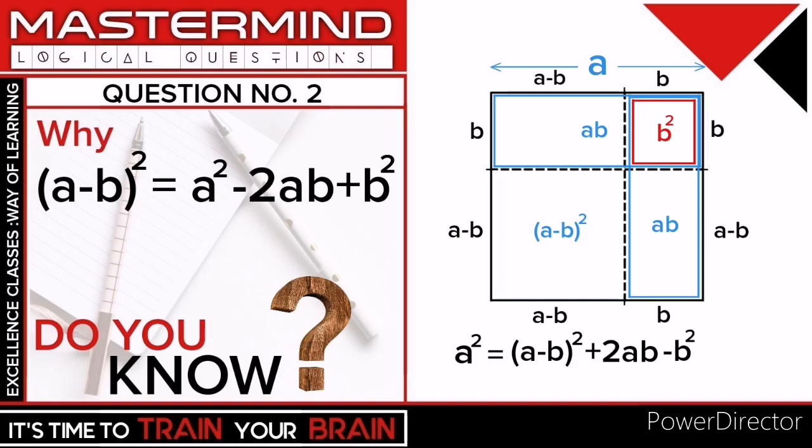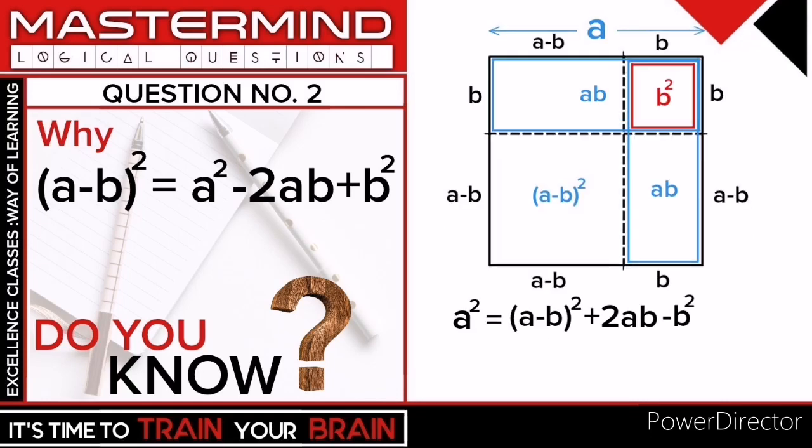On simplifying it, we get (a-b)² = a² - 2ab + b².